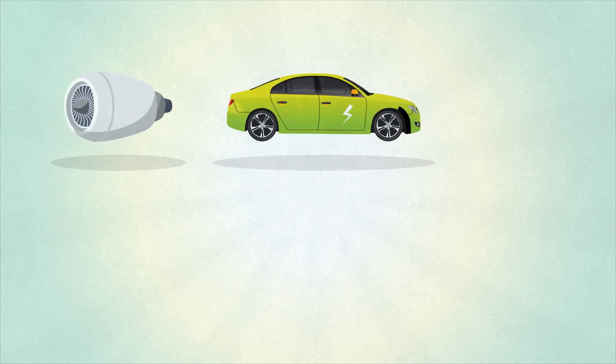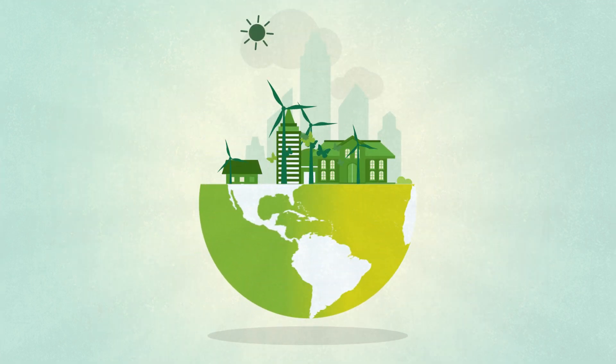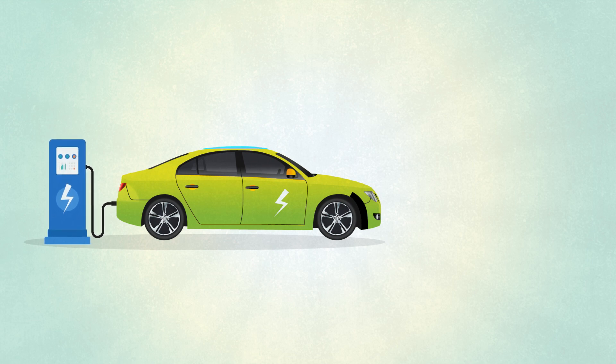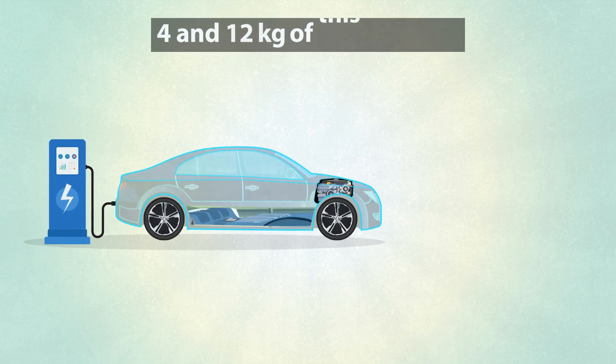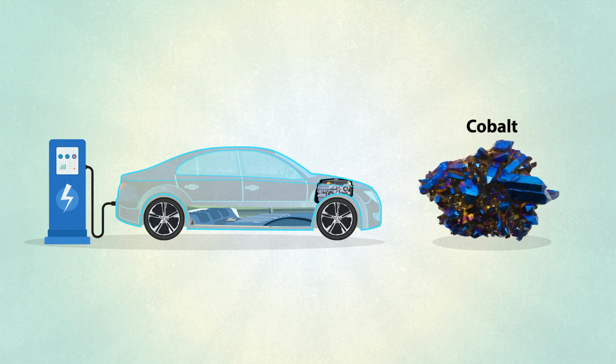What do these have in common? They have a special element inside. It is also a fundamental component of many of our green technologies. An electrical car battery can require between 4 and 12 kilograms of this material. Still don't know? This crucial metal is cobalt.